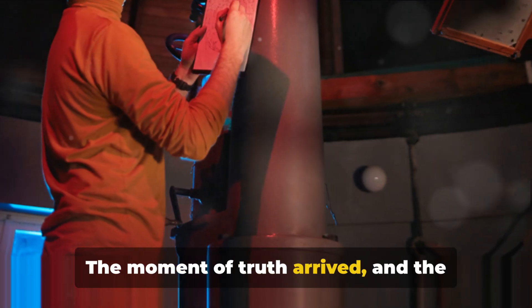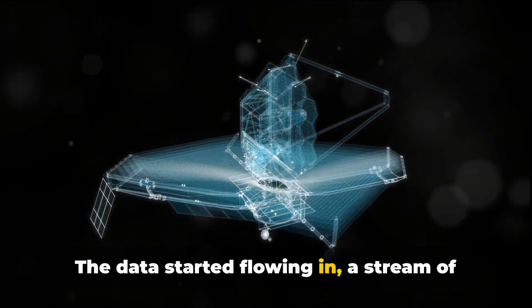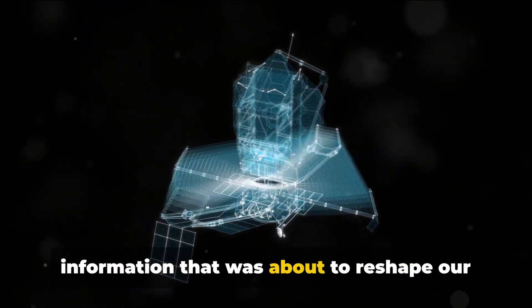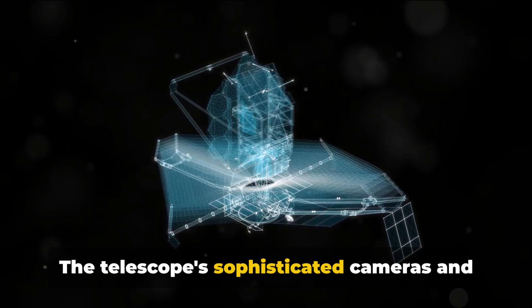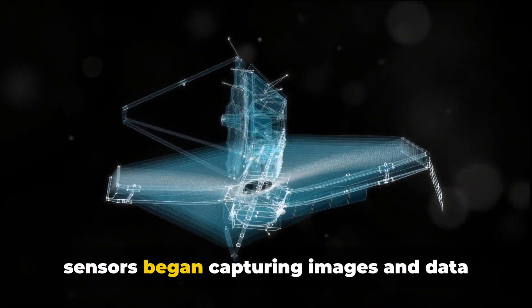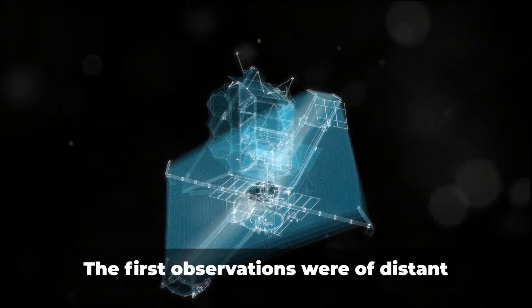The first observations made by the James Webb Telescope were eagerly anticipated by the scientific community. The moment of truth arrived, and the world held its breath. The data started flowing in, a stream of information that was about to reshape our understanding of the cosmos. The telescope's sophisticated cameras and sensors began capturing images and data that were unlike anything we had seen before.